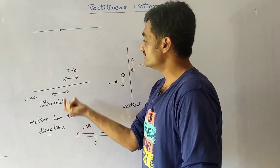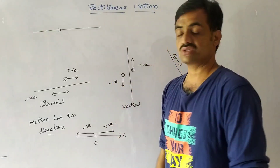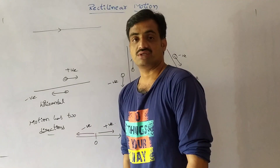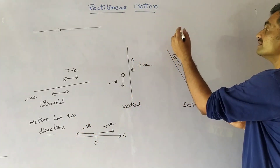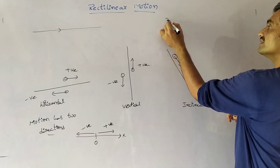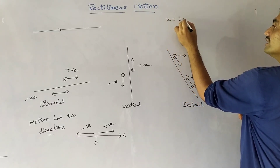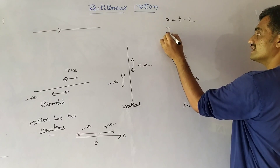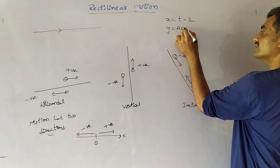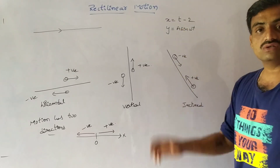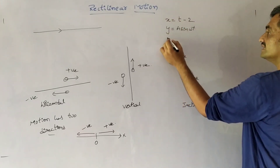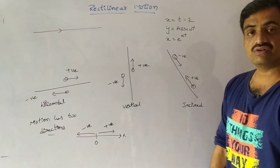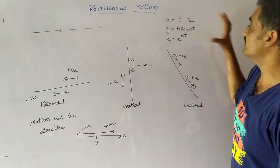Based on this sign convention applied to straight line motion along horizontal, vertical, and inclined forms, the straight line motion can be represented based on different equations. The first equation is x = t − 2. We can also represent it as y = A sin(ωt), or as x = e^(αt). In this way, we can represent the equations in different forms.